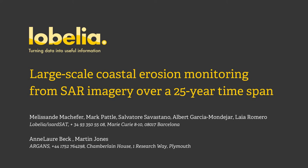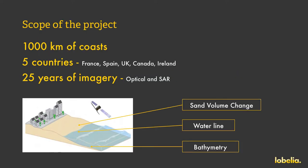Large-scale coastal erosion monitoring from SAR imagery over a 25-year time span. Consistent monitoring over time of coastal erosion is essential to understand the evolution of a non-endangered littoral. Satellite observations have been used for the monitoring of coastlines worldwide and are becoming increasingly useful for advanced studies of erosion, both with optical and radar instruments. A study based on 25 years of satellite imagery has been conducted over 1,000 kilometers of European coastlines in an automatic fashion for the quantification of erosion.